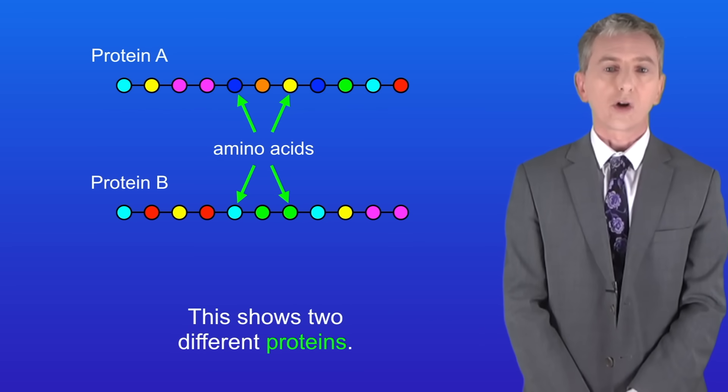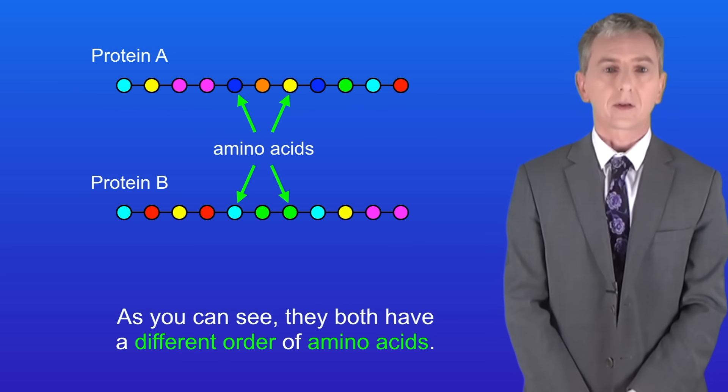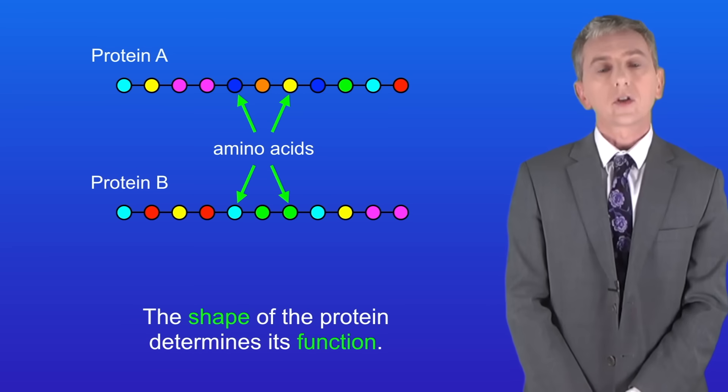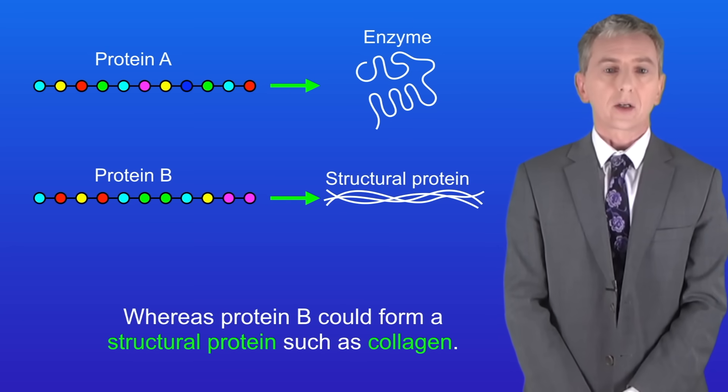I'm showing you here two different proteins. As you can see, they both have a different order of amino acids. Now the specific order of the amino acids determines the shape of the protein, and the shape of the protein determines its function. For example, protein A might be an enzyme molecule such as amylase, whereas protein B could form a structural protein such as collagen. Other proteins could become hormones such as insulin.